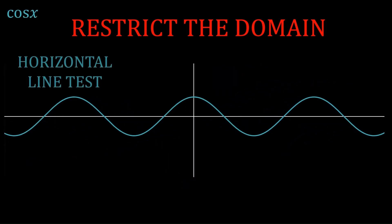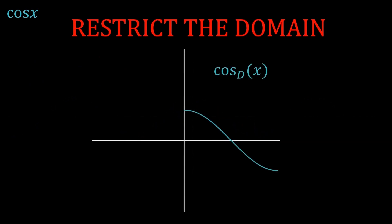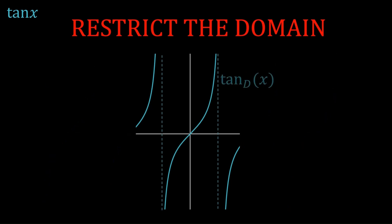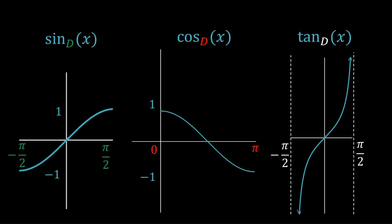Once again, you can see that it fails the horizontal line test, but we can actually choose the interval 0 to pi and restrict the graph to this domain, giving us cos d of x. And now it passes the horizontal line test, so we can invert it. Same idea for tan, it fails the horizontal line test, so we restrict it to this middle branch, minus pi on 2 to pi on 2. And we don't include the endpoints, by the way, because for tan, it's not defined at these endpoints. So these are the restricted versions of the trig functions.